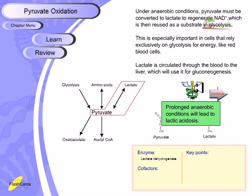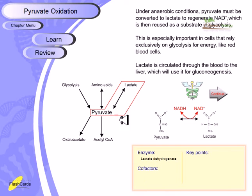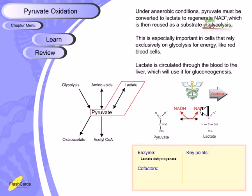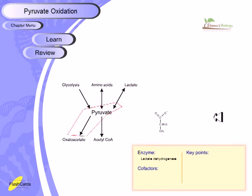Prolonged anaerobic conditions lead to lactic acidosis, which is a dangerous disease. The conversion from pyruvate to lactate is conducted by the enzyme lactate dehydrogenase, which converts pyruvate into lactate. This involves the conversion of NADH into NAD+, which is really important because it allows us to re-incorporate NAD+ inside the cytosol, which had been consumed previously.